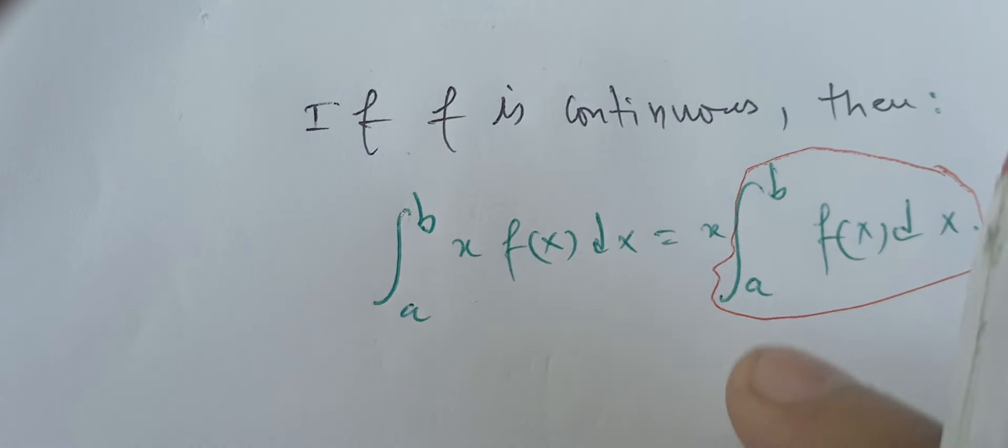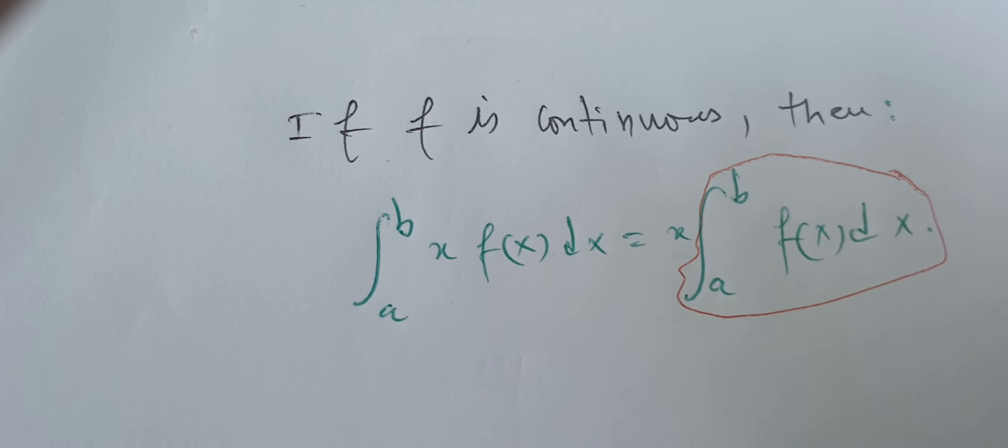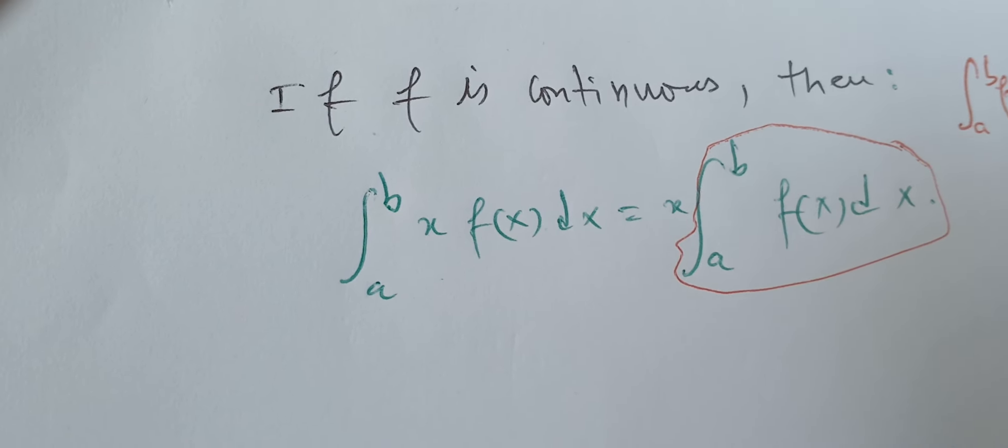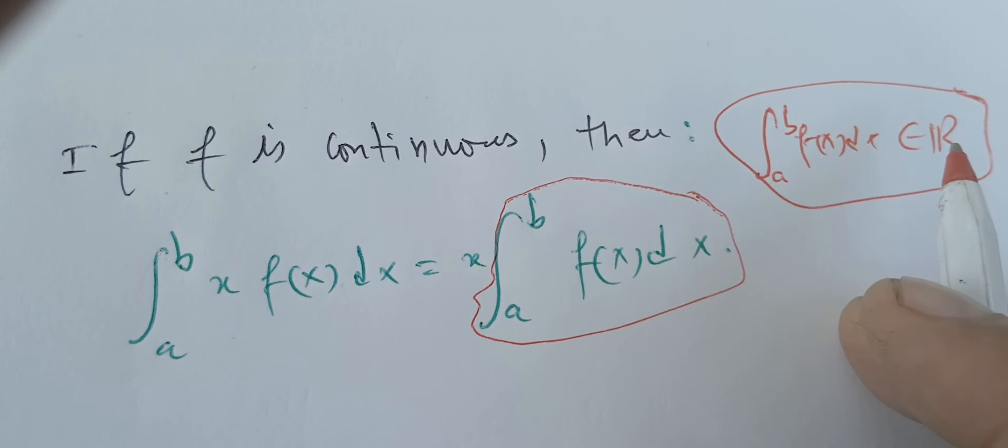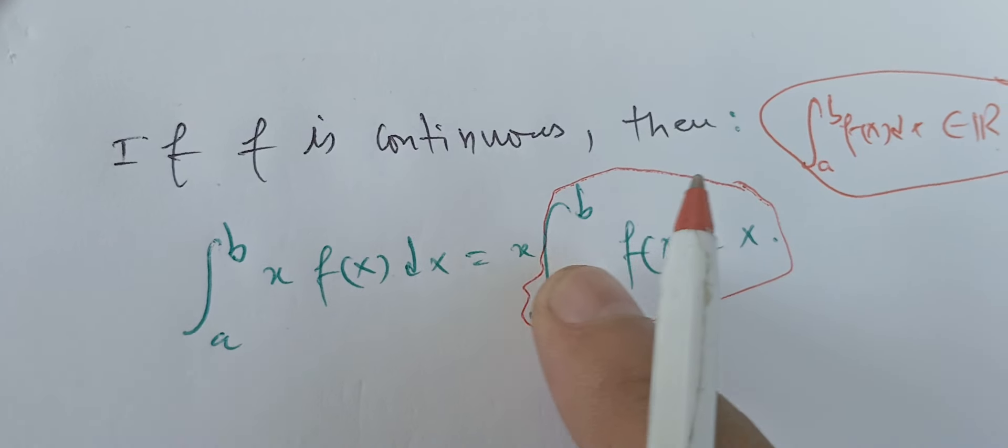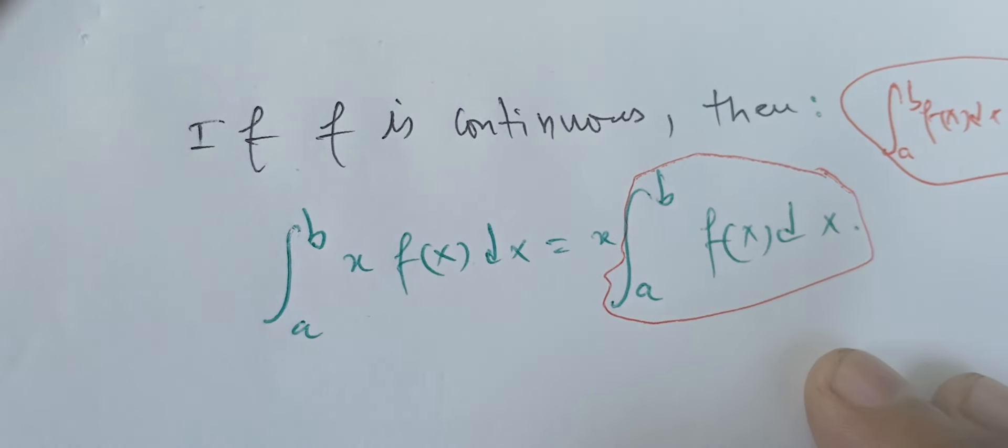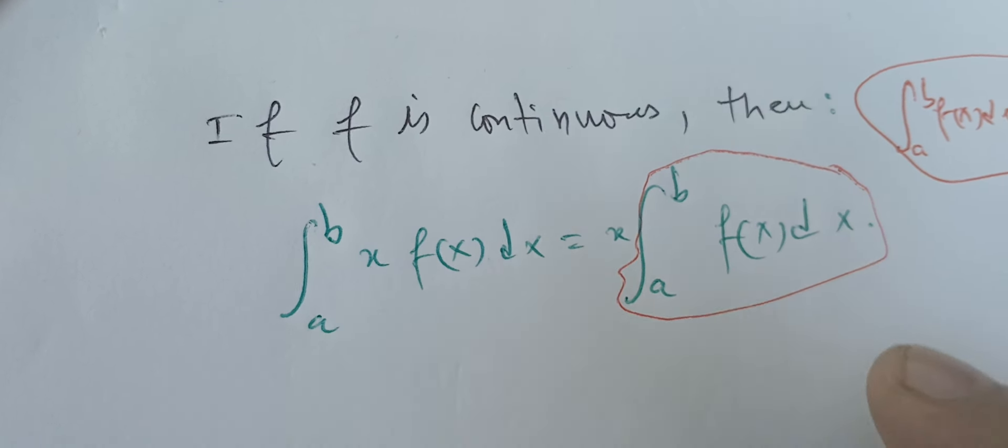This is the first thing that you need to notice. Remember that the integral of f(x) dx between a and b is just a number in R. So this is a number times x equals some number. Is this one true all the time? No, of course.